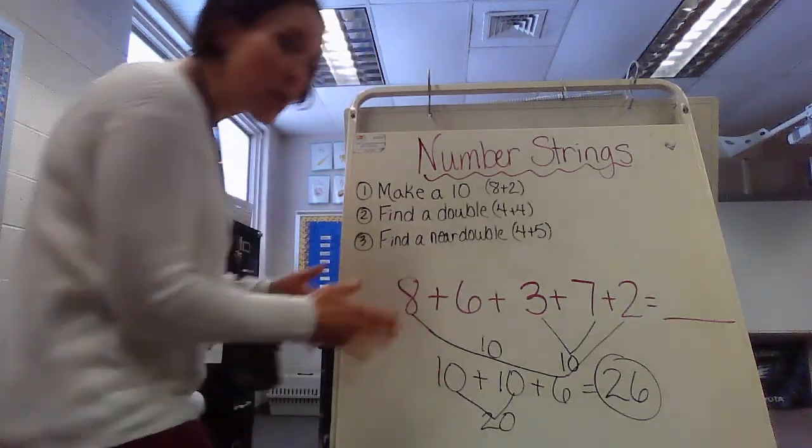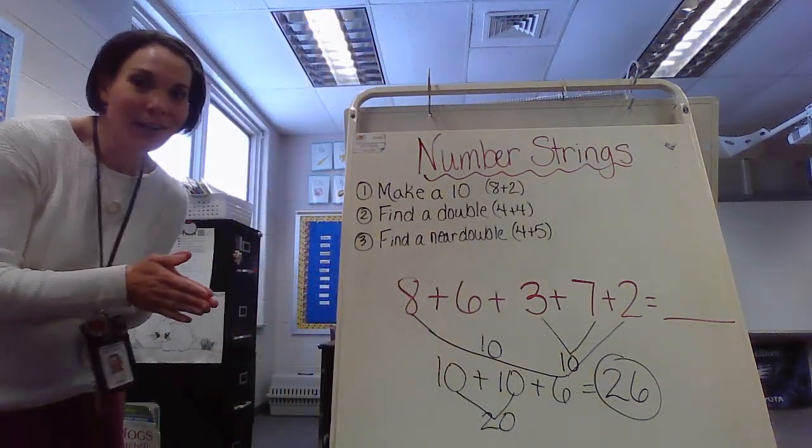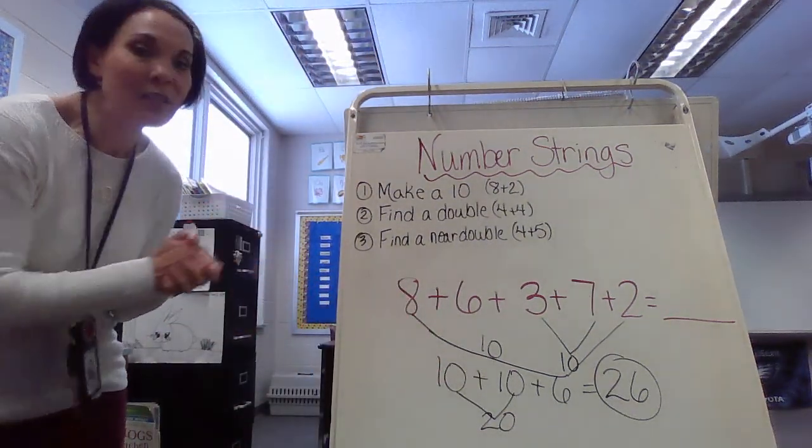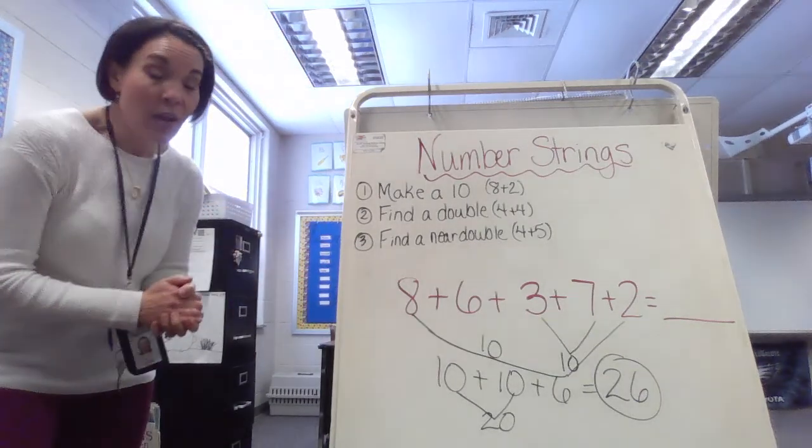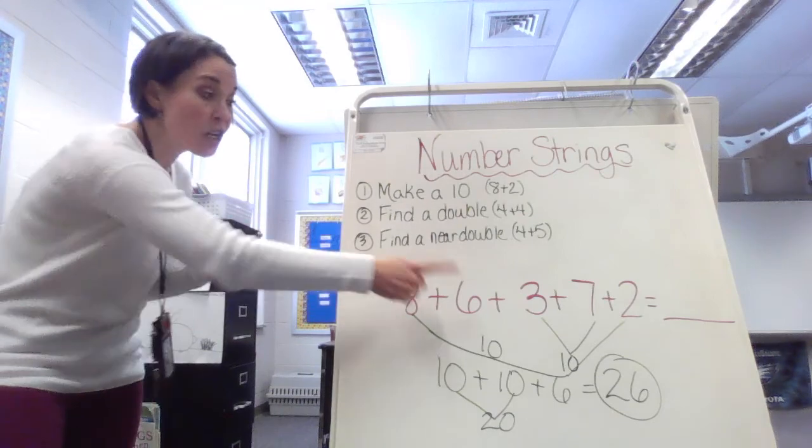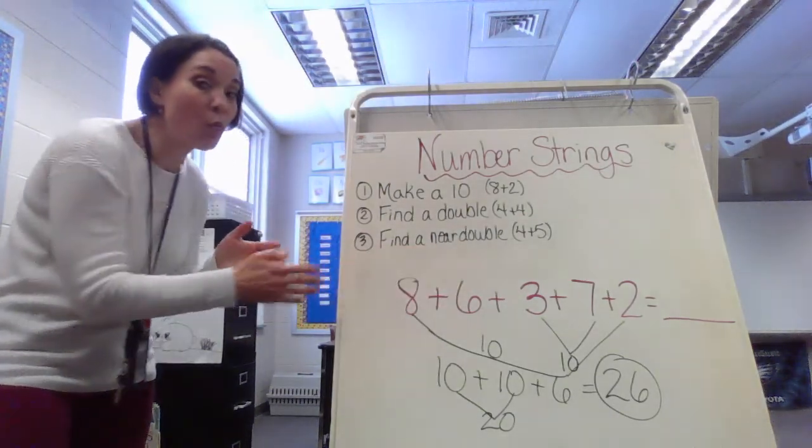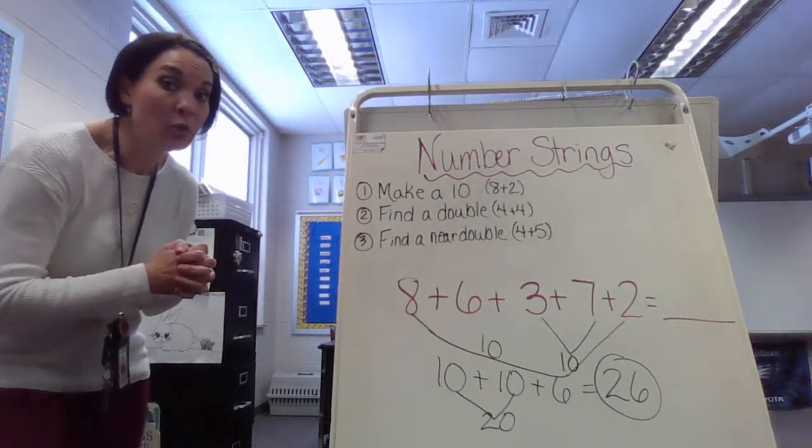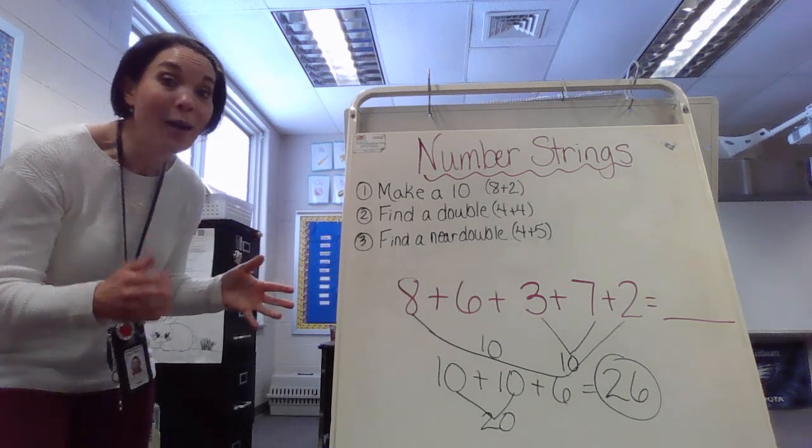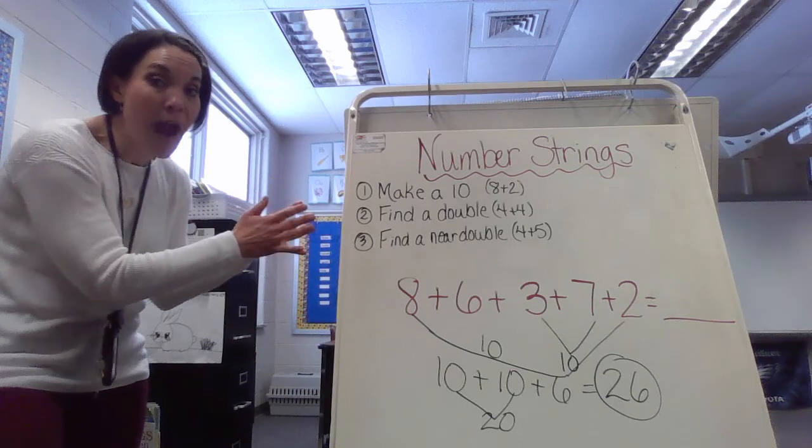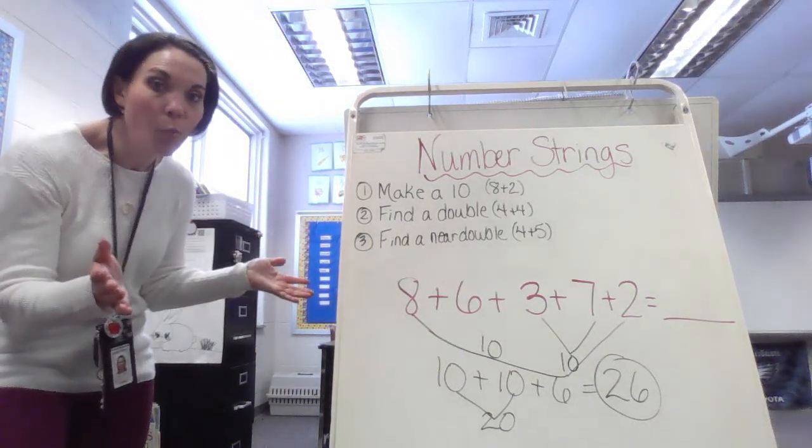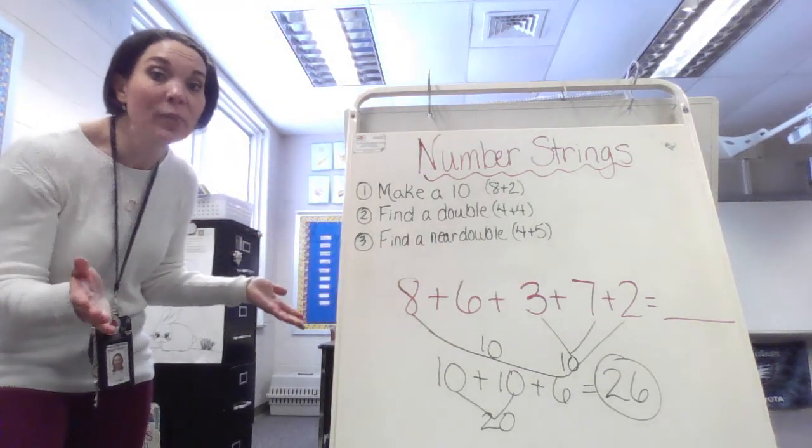So what did we do? We used those strategies. Those strategies for number strings helped us out. We could have an even longer number string. We could have number strings that are double-digit numbers. You won't be focusing only on ones that are single-digit numbers, but you could get ones that are even harder. But as long as you kind of follow these strategies, it's going to help you out. It's going to make things a little bit easier.